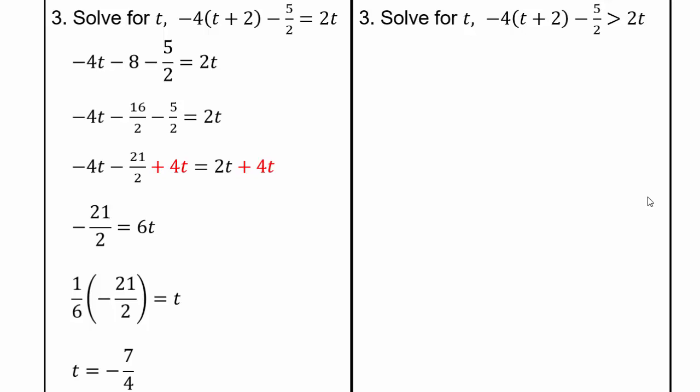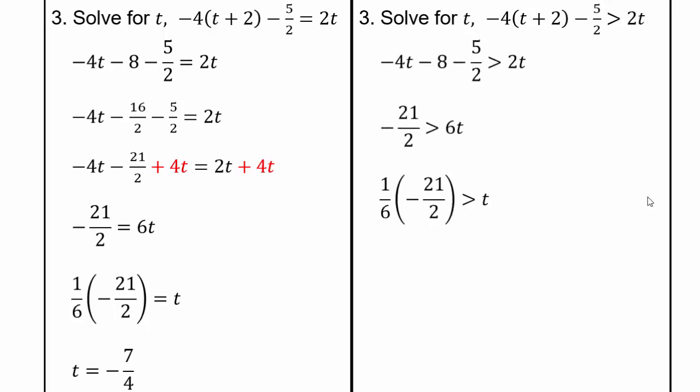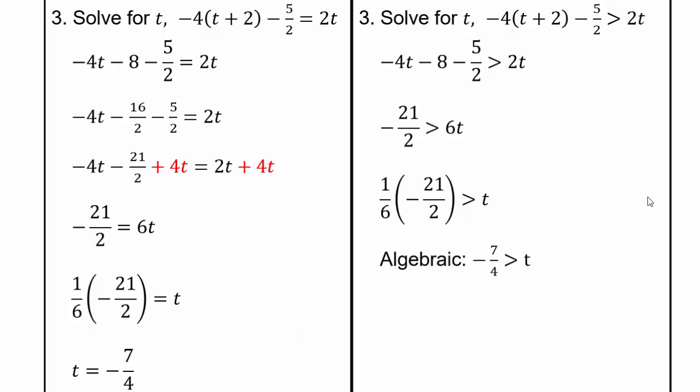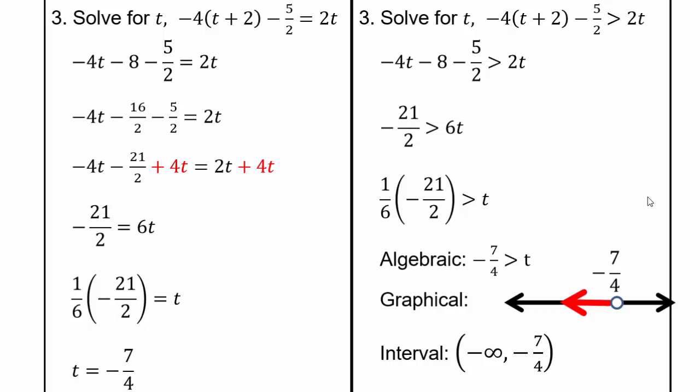Remember, it does not matter whether the variable is on the left or on the right, because if a equals b, that's the same as b equals a. For the inequality, we do the same steps, but remember: if you divide or multiply by a negative, you need to change the inequality sign. Here we only divide by 6, so the algebraic solution is negative 7 fourths is greater than t — meaning t is less than negative 7 fourths. Interval notation: negative infinity to negative 7 fourths, with round brackets or parentheses on both ends because neither is included.